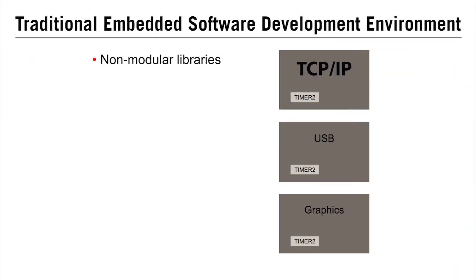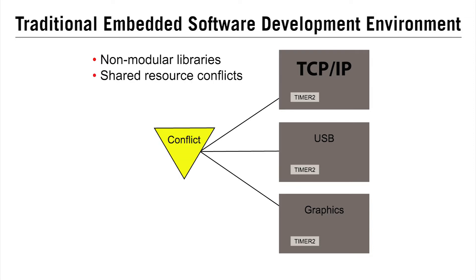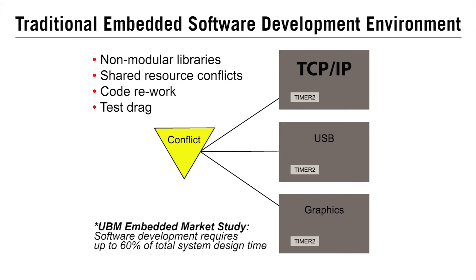Consider a scenario where a TCP/IP stack might have to be used in a complex application that needs multiple unrelated libraries to work together. If these libraries are not modular, which is the case in a traditional embedded software development environment, the TCP/IP library would directly access resources such as timers shared with other libraries. This leads to conflict that might even cause the system to hang, requiring a lot of code rework followed by rigorous testing. No wonder the traditional embedded software approach eats up to 60% of the total system design time.